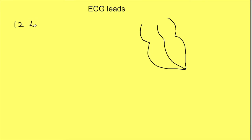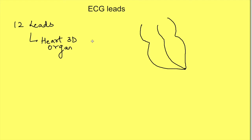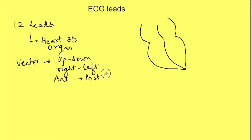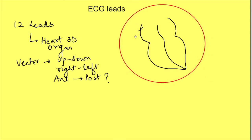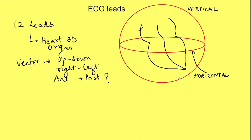Now let us see other ECG leads and why we need so many - there are in total 12 ECG leads. We cannot get full information about the spread of depolarization from a single lead, because the heart is a 3D organ and one lead only tells about 2D spread of depolarization. We were talking in 2D terms - vector direction pointing left, right, up, or down - but what about the anterior to posterior direction? To fully understand the spread of depolarization, we place multiple leads directed in multiple directions, in both a vertical plane and a horizontal plane around the heart.